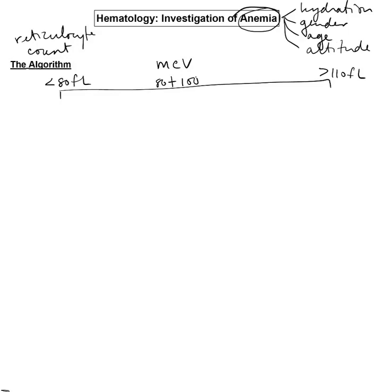This works very well because the causes of microcytic anemia are all due to decreased production of hemoglobin. Breaking down the word hemoglobin: the heme group gives us our sideroblastic anemias; iron gives us two diseases — iron deficiency and anemia of chronic disease; and globin gives us our thalassemias. So in fact, it's a nice, tight, easy-to-remember differential.